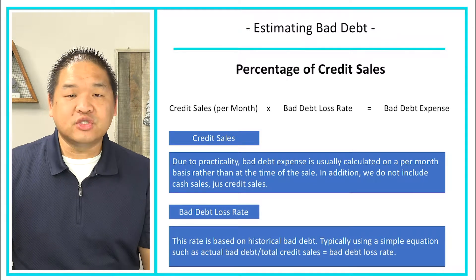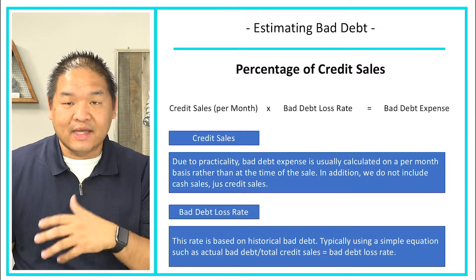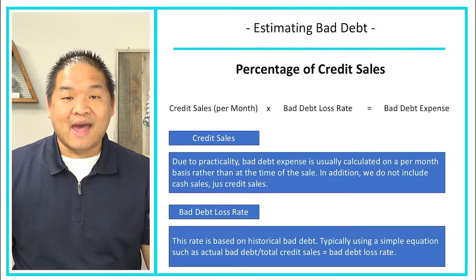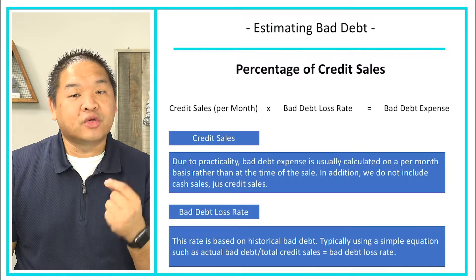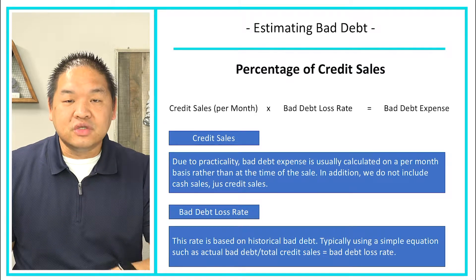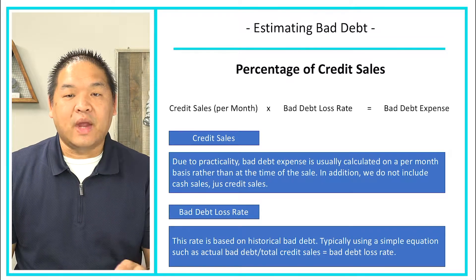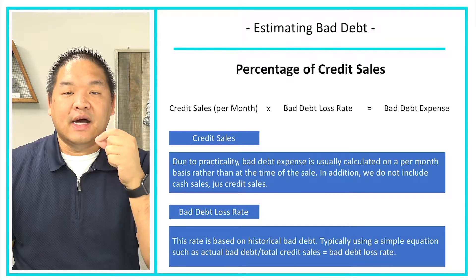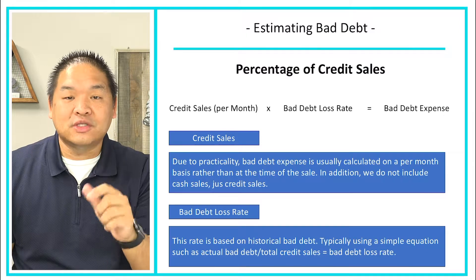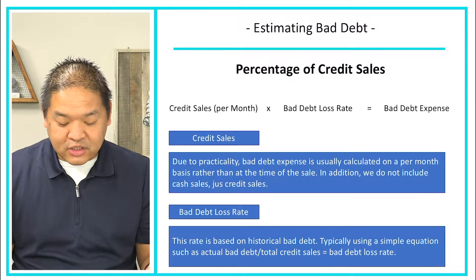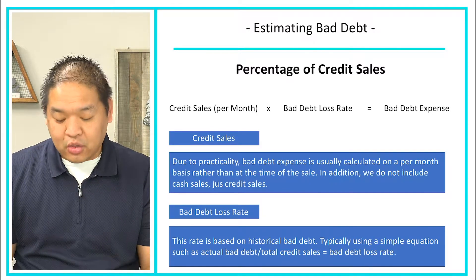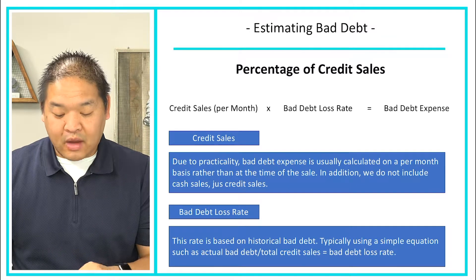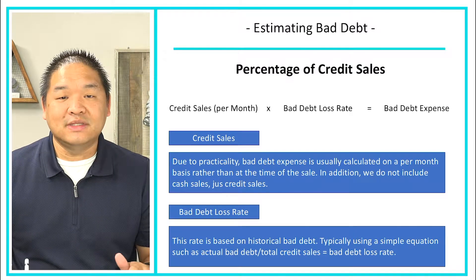The bad debt loss rate is based on historical bad debt. A company might look back three or four years to see what percentage of their receivables were uncollected and use that to calculate the rate. If the business is just starting, you estimate the rate and refine it over time. A simple formula: actual bad debt divided by total credit sales gives you the bad debt loss ratio. If a problem doesn't give you the rate, you'll need to calculate it yourself.